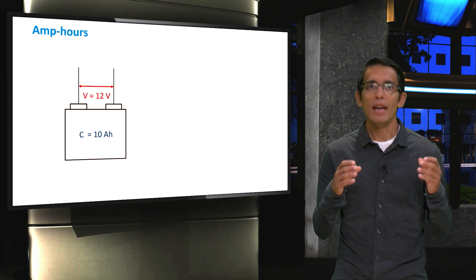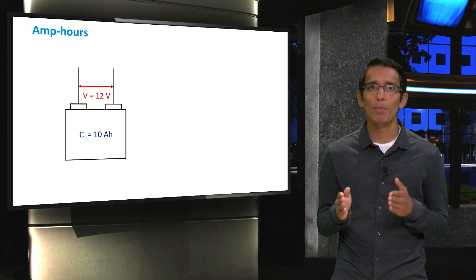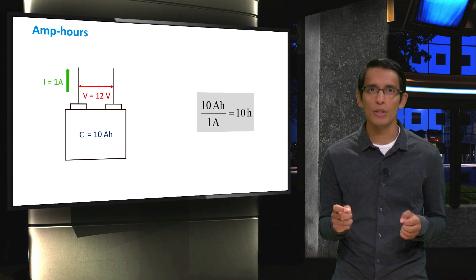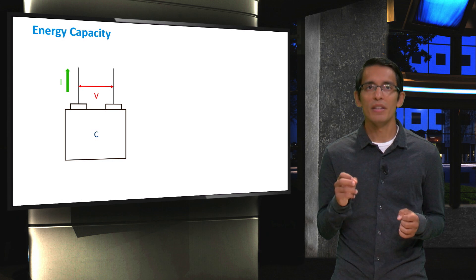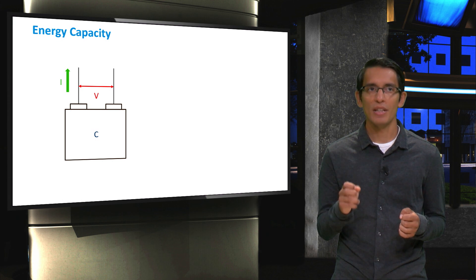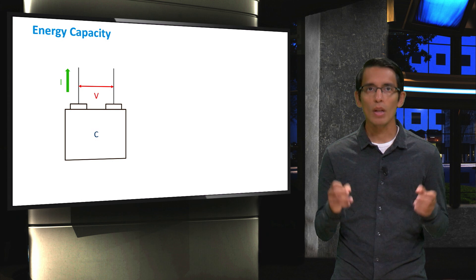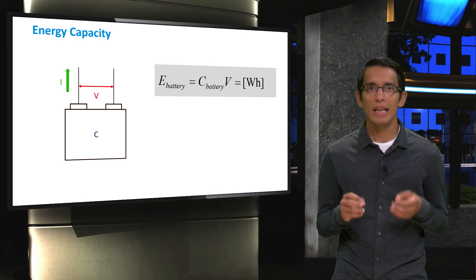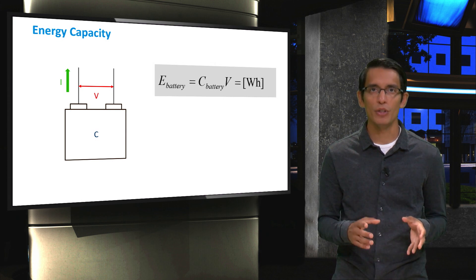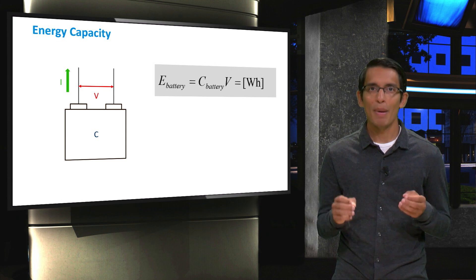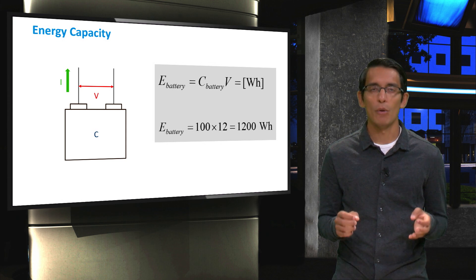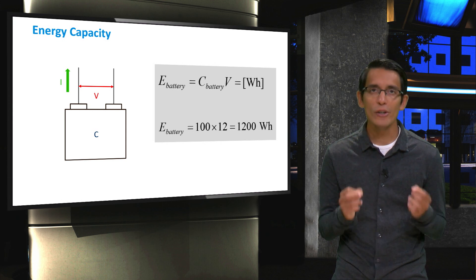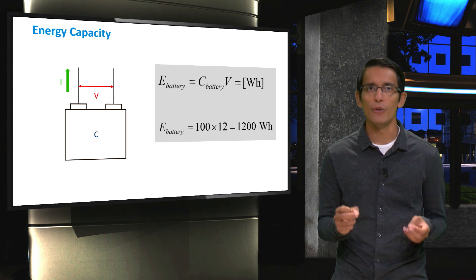For example, a 10 amp hour, 12 volt battery can deliver 1 amp for 10 hours at a voltage of 12 volts. Thus, from the above parameters, we can define the energy capacity of a battery, which is expressed in watt hours. The energy capacity of a battery is simply given by multiplying the rated battery voltage, measured in volts, by the battery capacity, measured in amp hours. For example, a 100 amp hour, 12 volt battery will have an energy capacity of 1200 watt hours.